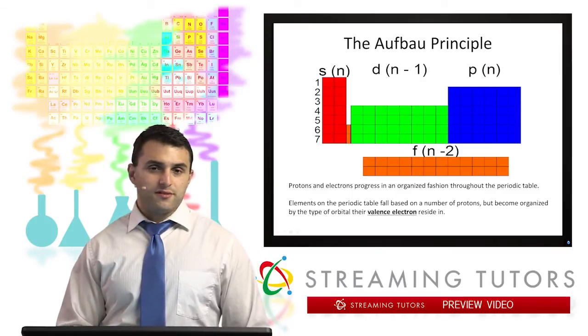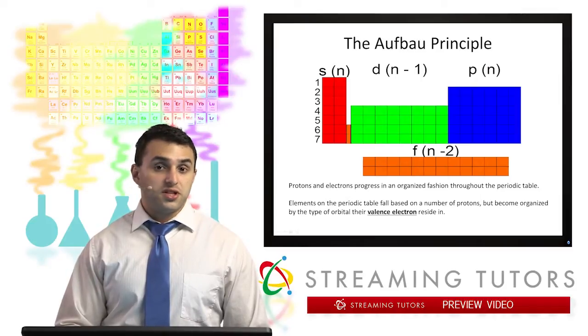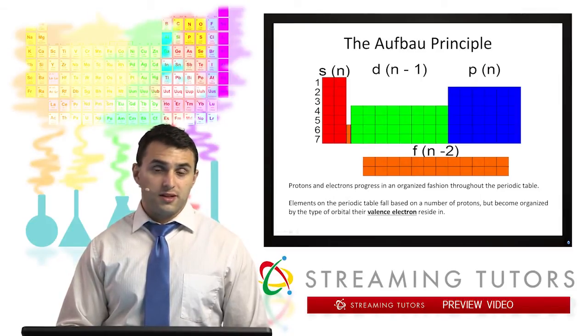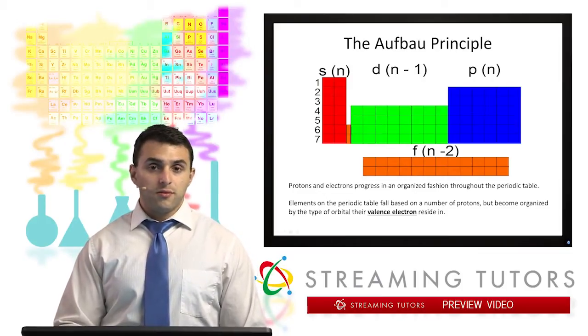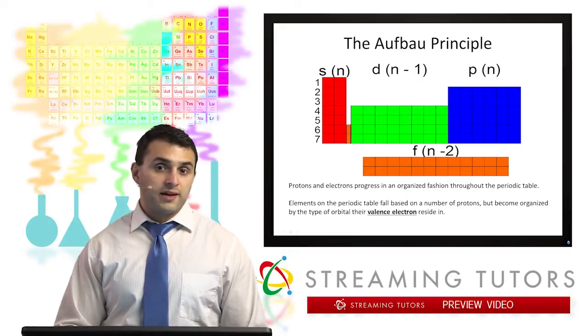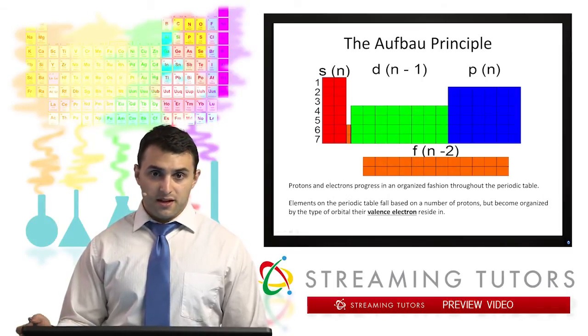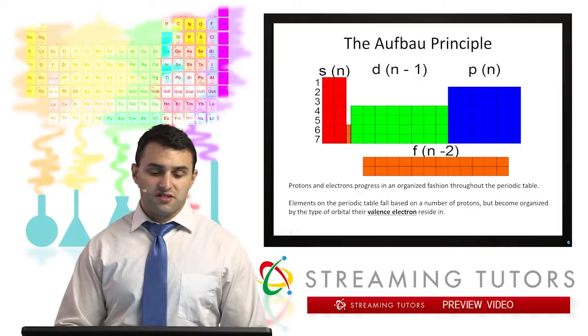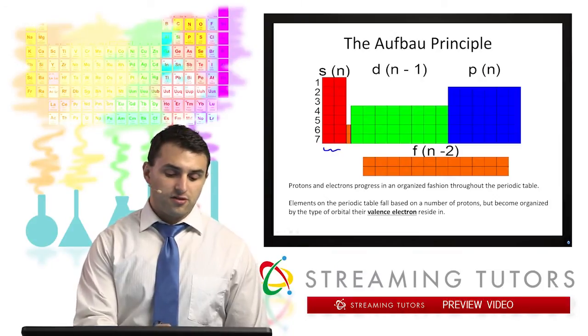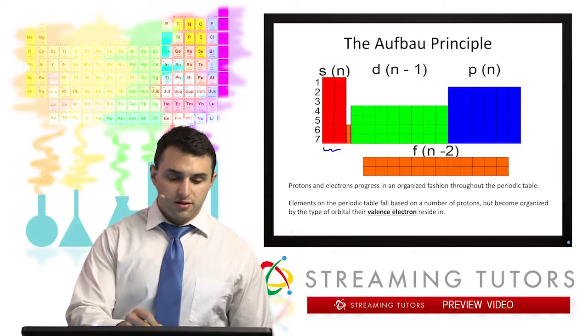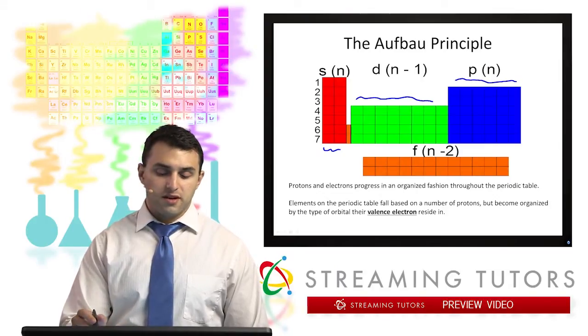The Aufbau Principle is just a way of counting on the periodic table to see where the valence electrons of each species are going to be, whether it be in the s orbital, whether it be in the p orbital or d orbital, and then also which energy level they'll be in. So what we can do with the Aufbau Principle is we can literally count across the periodic table and that'll get us a way of determining what orbitals we're going to find our electrons in. On the left side we have our s orbital species, we have our d orbital species in the middle, the transition metals, and we have our p orbital species on the right side, the non-metals.